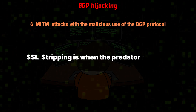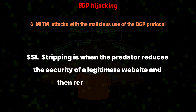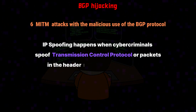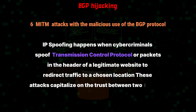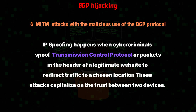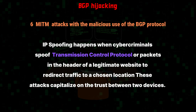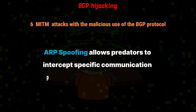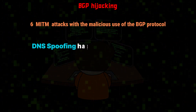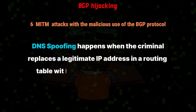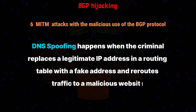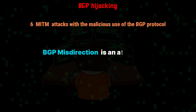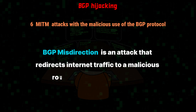Number 2: SSL stripping is when the predator reduces the security of a legitimate website and then reroutes fake traffic. Number 3: IP spoofing happens when cybercriminals spoof TCP packets in the header of a legitimate website to redirect traffic to a chosen location, capitalizing on the trust between two devices. Number 4: ARP spoofing allows predators to intercept specific communication packets between network nodes. Number 5: DNS spoofing happens when the criminal replaces a legitimate IP address in a routing table with a fake address and reroutes traffic to a malicious website. Number 6: BGP misdirection is an attack that redirects internet traffic to a malicious route by spoofing IP prefixes.